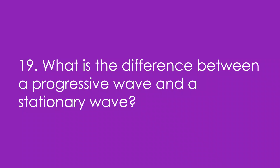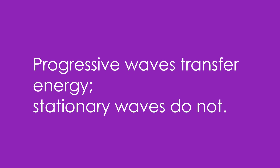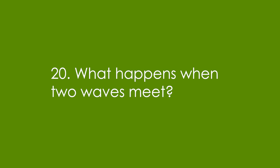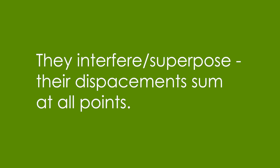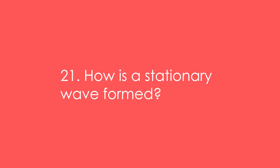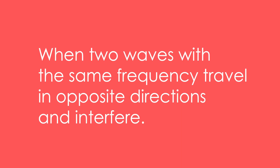19. What is the difference between a progressive wave and a stationary wave? Progressive waves transfer energy; stationary waves do not. 20. What happens when two waves meet? They interfere or superpose — their displacements sum at all points. 21. How is a stationary wave formed? When two waves with the same frequency travel in opposite directions and interfere with each other.